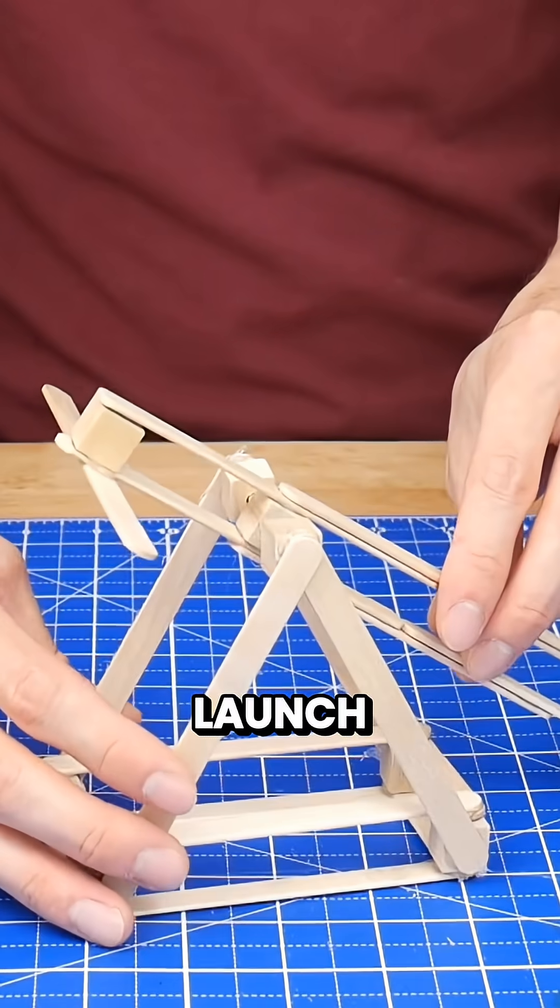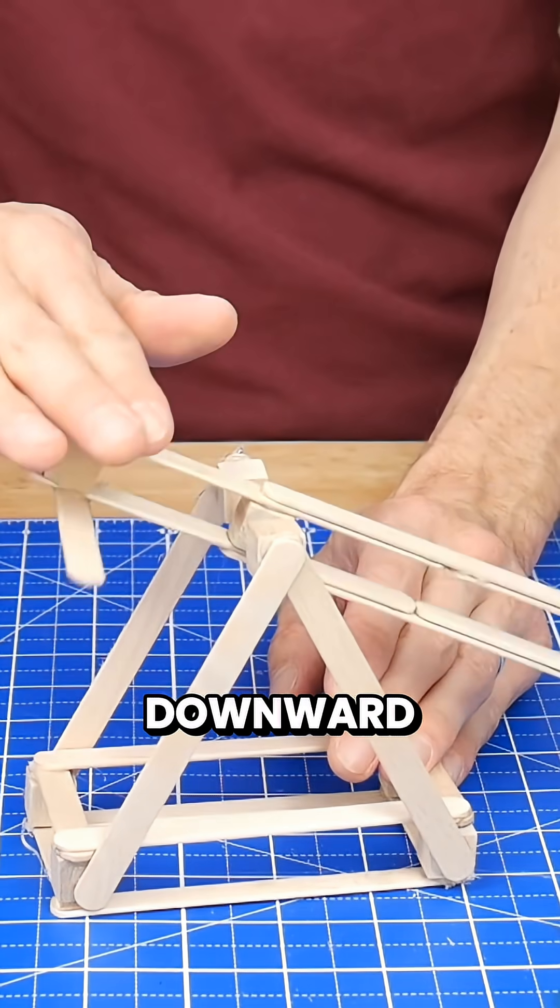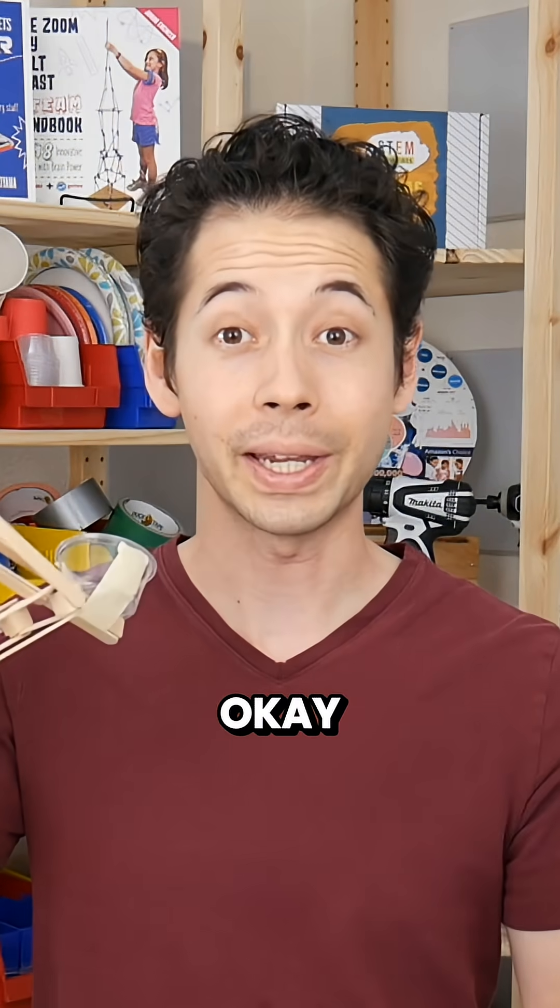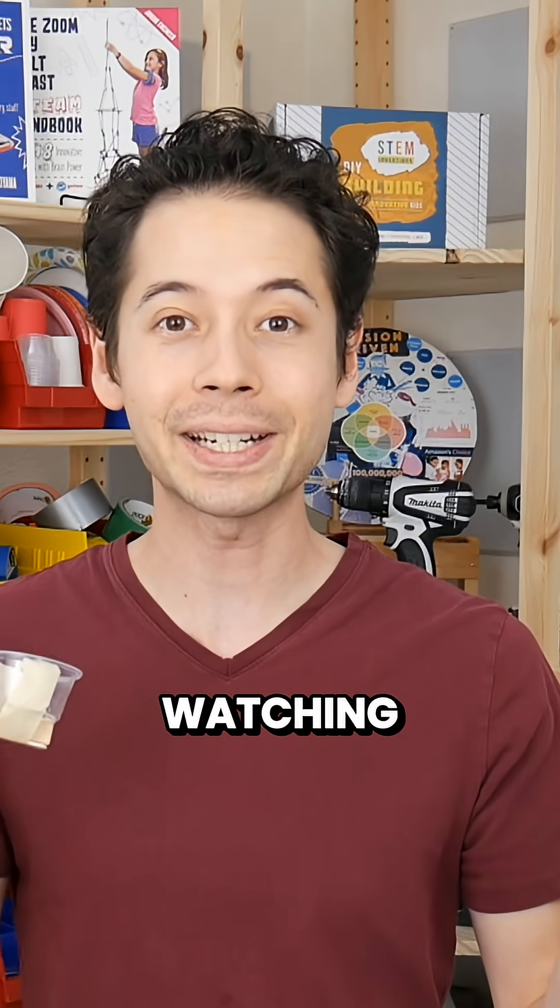The best technique to get a good launch is to strike downward on the short end of the catapult arm with your fingers and follow through. Okay, that's it for this video. Thanks so much for watching and I'll see you next time.